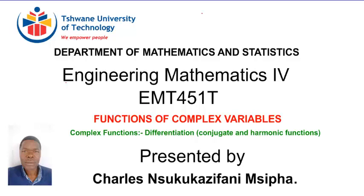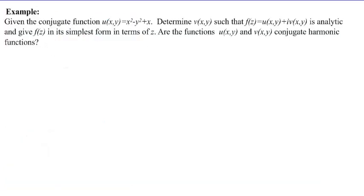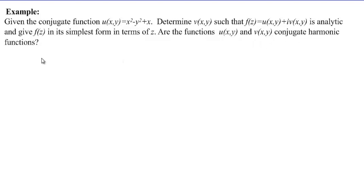The example is as follows. We are given u which is equal to x squared minus y squared plus x. We need to determine v of x, y such that f of z equals u plus vi is an analytic function. And we need to give f of z in its simplest form in terms of z. Lastly, we need to check whether u and v are conjugate harmonic functions.